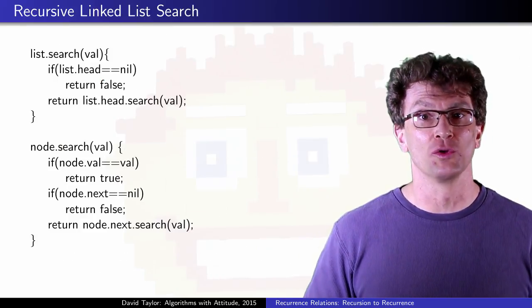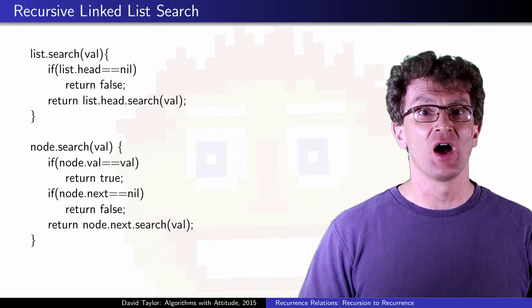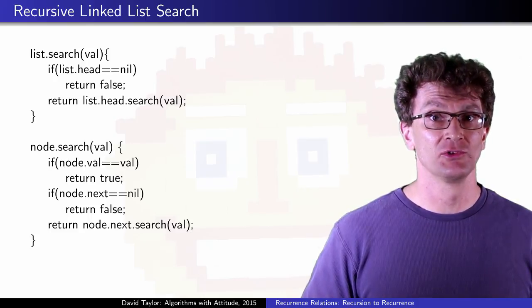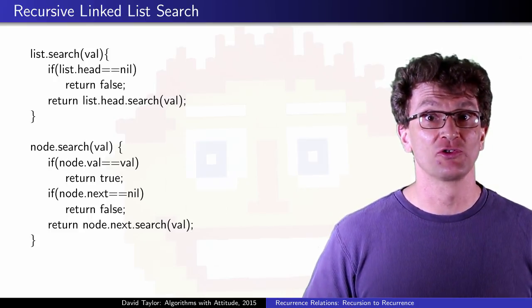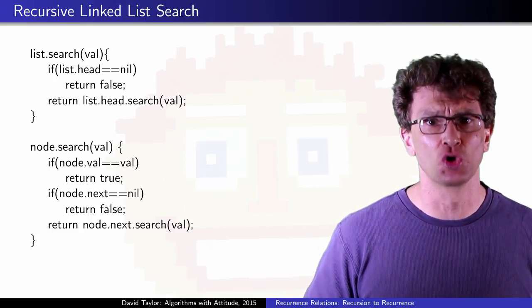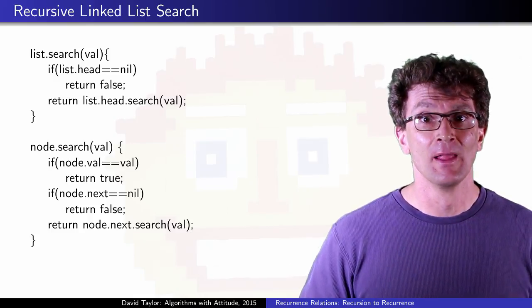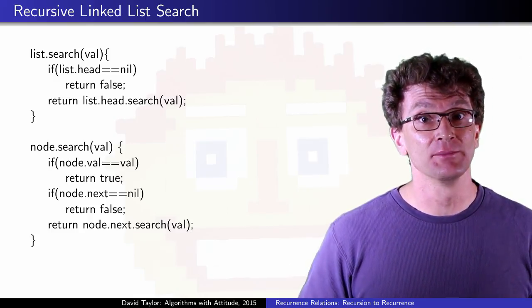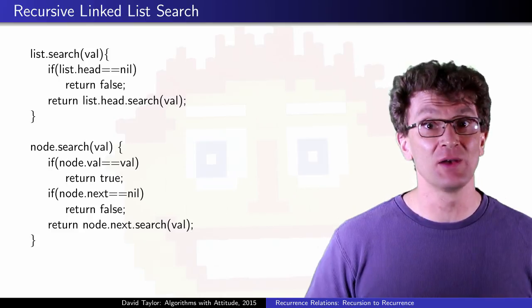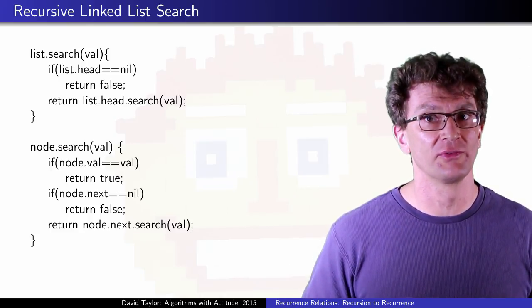Moving to a slightly more useful program, imagine that we have an unsorted linked list of values, and we want to search those values for one in particular, and we just return true or false if it's in the list. If the list has n items, we could search the first one, and then recursively search the rest of the list.